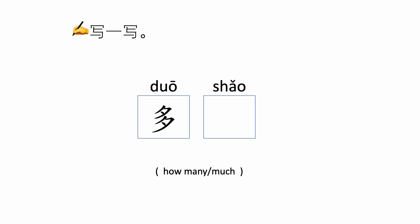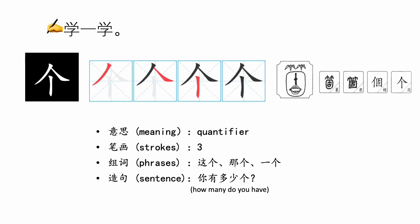Try to write the 少 by yourself. The next character is 个. It's a quantifier — usually a measure word. In the past, this character looked like a bamboo leaf on top, a bamboo pole in the middle, and a root below, but now it has been simplified. 个 has three strokes: 撇, 那, 数.